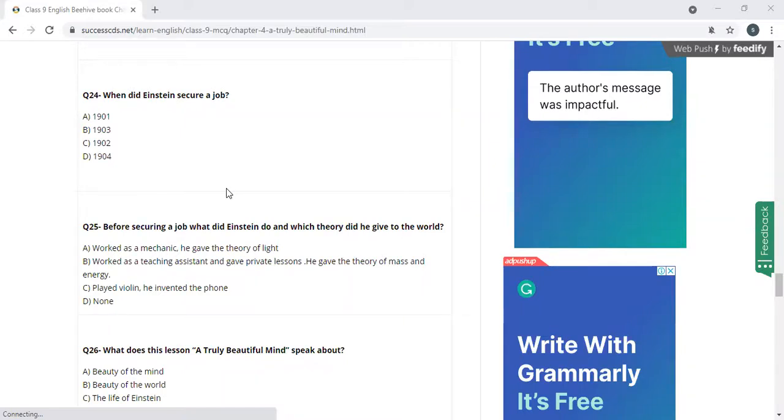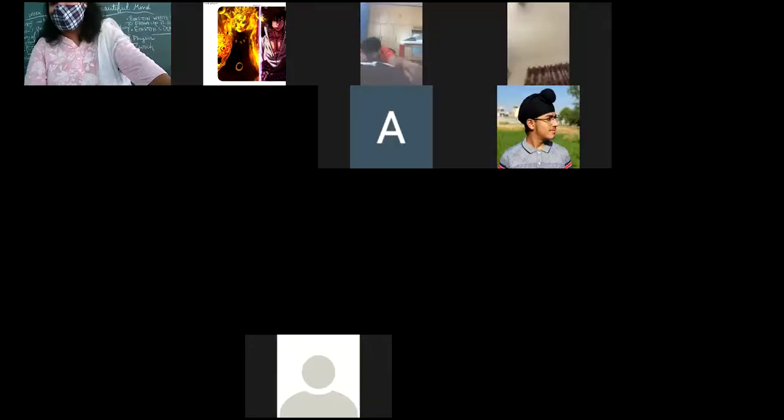When did Einstein secure a job? 1901, 1902, 1903, 1904. 1902. So we are done with this. Have a nice day, and please send your notebook.